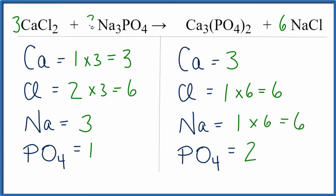Let's put a two in front of the sodium phosphate. So now three times two, that gives us six. Those are balanced. And now we have the phosphate here, one of them times two, that'll give us two phosphates. And this equation is balanced.